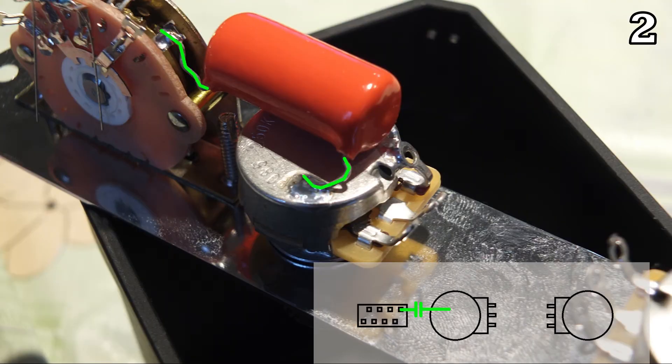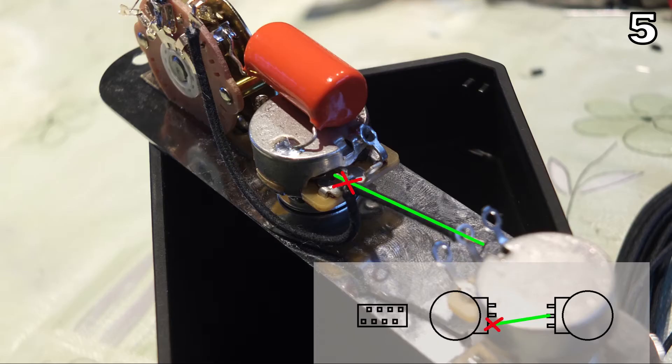This picture shows now step number two and you can see that all the markings from step number one have been removed. Something else you will come across in this tutorial are these red crosses.